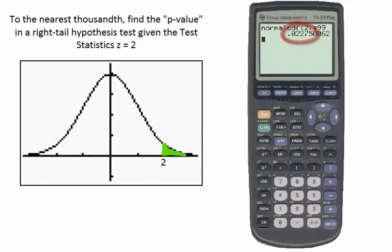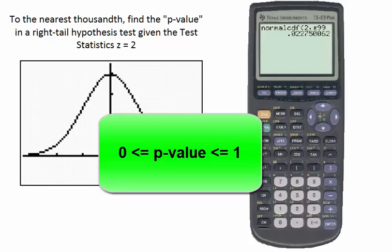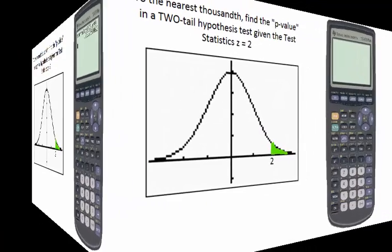In fact, the p-value will always be a positive number, and that's because p-value stands for probability value, and we know that probability is always a positive number between 0 and 1, inclusive.